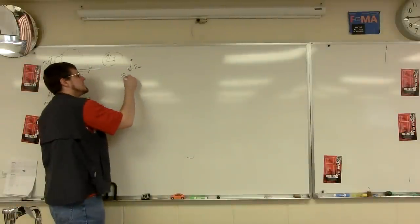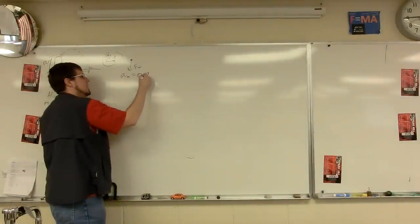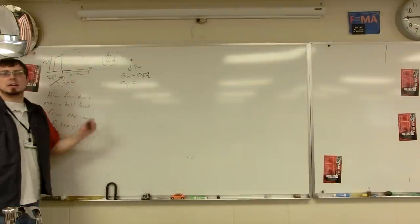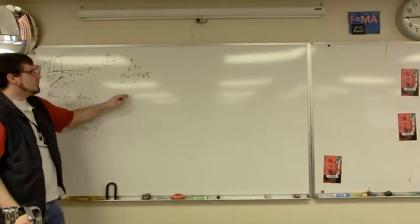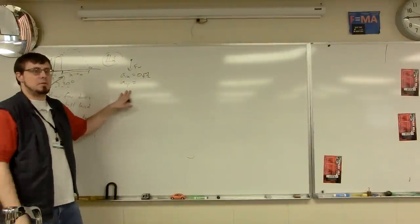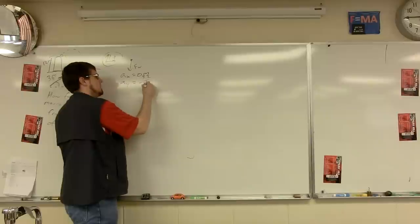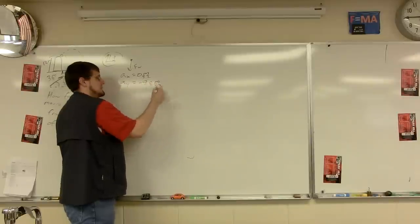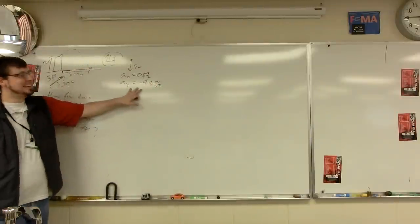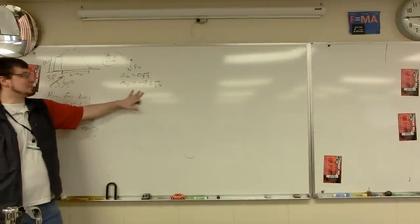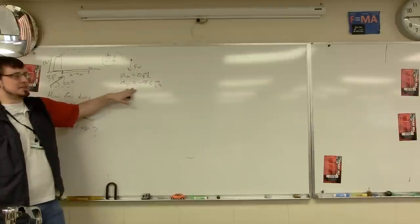So this free body diagram does tell us that the acceleration in the X is zero, and then if we're in free fall, and this is the only force in the Y, you can sum your forces, the M's will cancel. And what acceleration will you get if you're in free fall in the Y? Negative 9.8 meters per second squared. Yes, very good. Negative 9.8 meters per second squared. This is all assuming you call up and right positive.